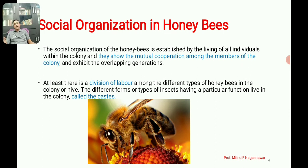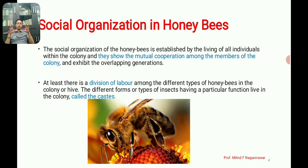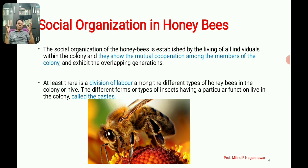Honeybees are social insects — social organisms. Organisms that have very well-managed colonies with groups of different functional members are called social organisms. In this social organization, each member of the hive shows mutual cooperation among themselves. Though they have different functions, they work together, which is what defines social organization.